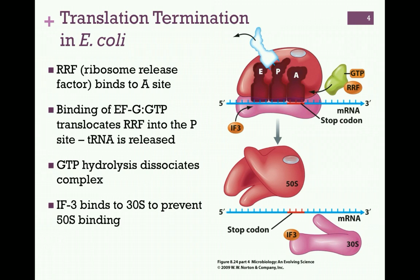Following GTP hydrolysis, EFG and RRF are released, and the entire complex dissociates. IF3 binding to the newly released small ribosomal subunit ensures premature binding of the large 50S subunit. Now the released subunits can reassociate on a new message to form the initiation complex and begin translating that message.